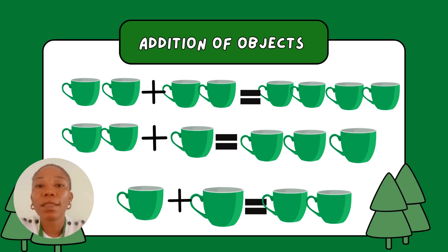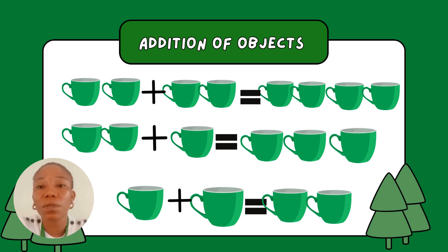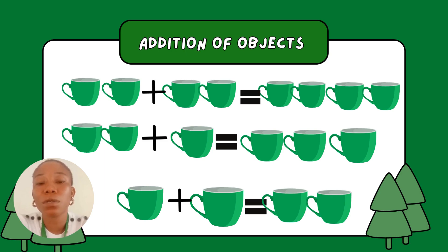Addition of objects. What objects do we have here? We have cups. We have two cups plus another two cups. Now let's count all the cups together. We have one, two, three, four. It means we have four cups.